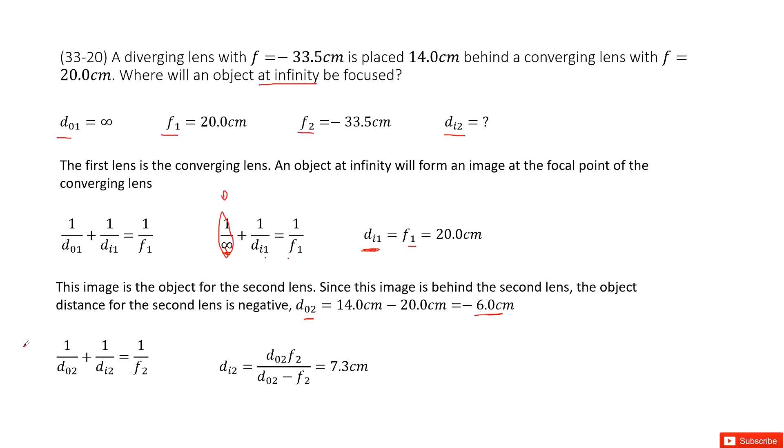Now we write down the lens equation for the second lens. dO2 is given, f2 is given. We need to find di2 to solve this equation. If you input all the given quantities, you get the answer. Thank you.